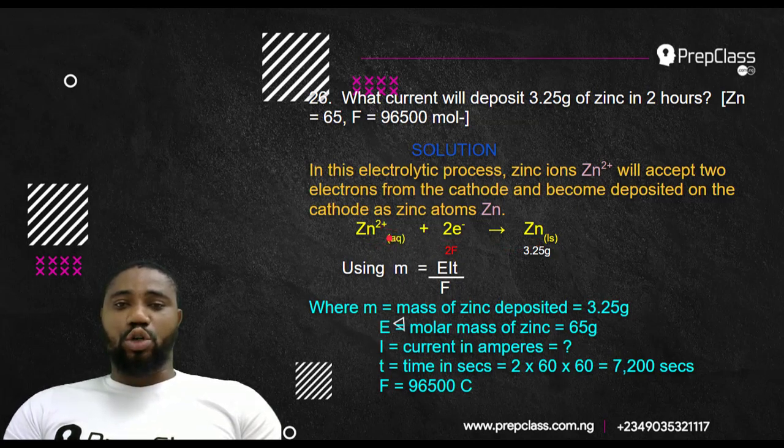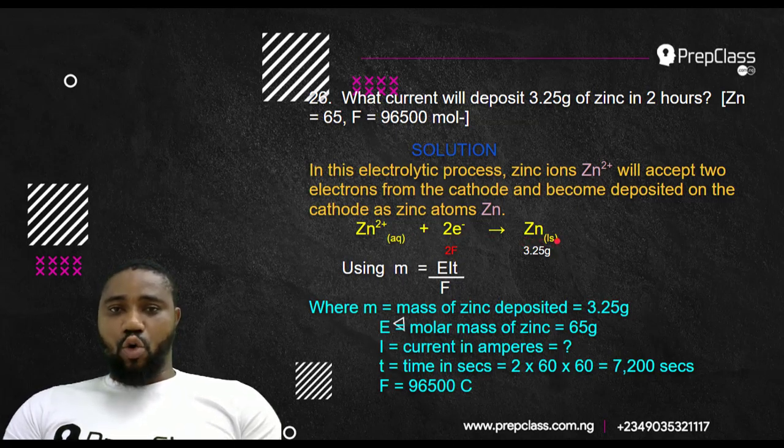This zinc Zn2+ will migrate to the cathode, the negative electrode. When it gets there, it will draw two electrons from it and become discharged as zinc atom. That's why it's here Zn aqueous. This aqueous means it is in solution. If it accepts two electrons, it becomes Zn solid to now coat on the cathode as Zn solid.